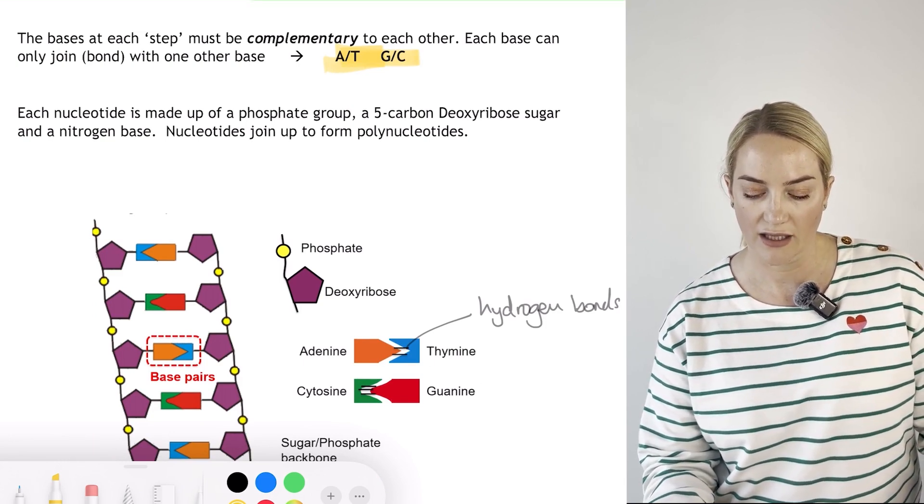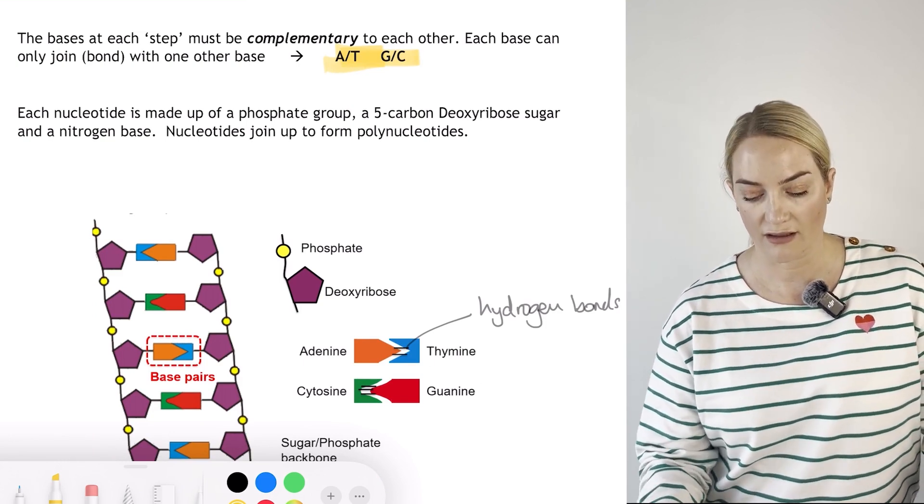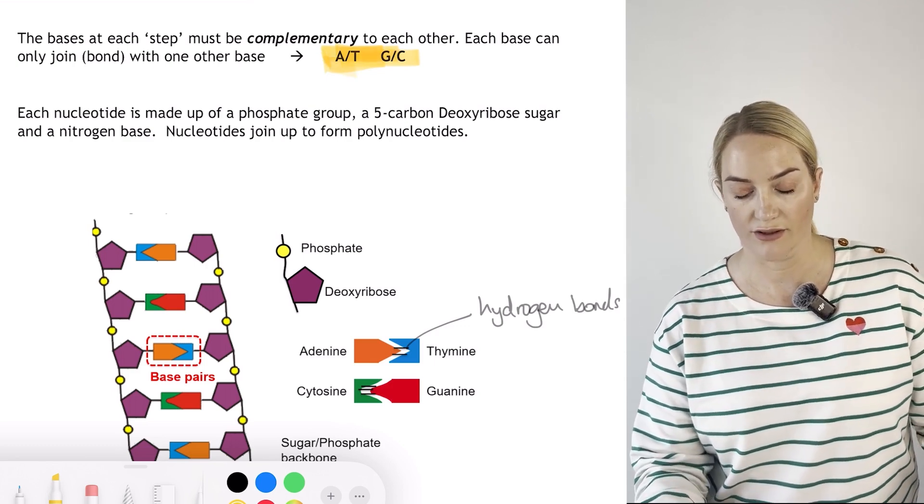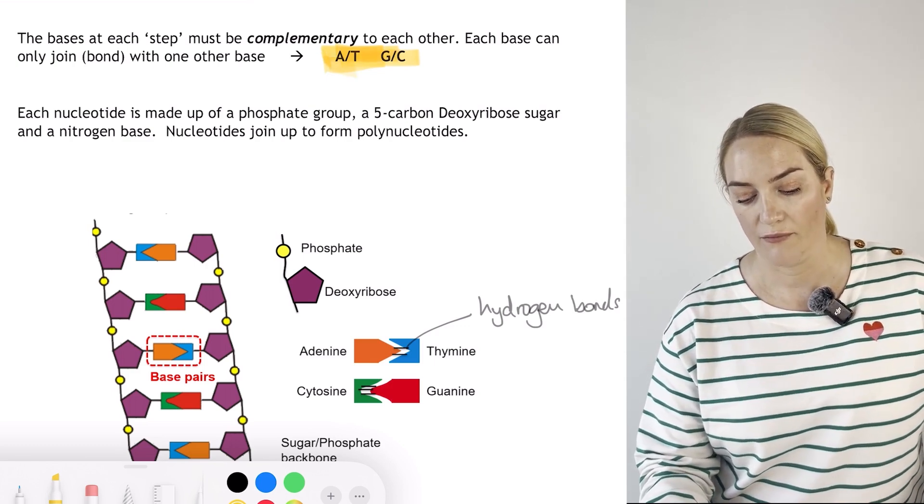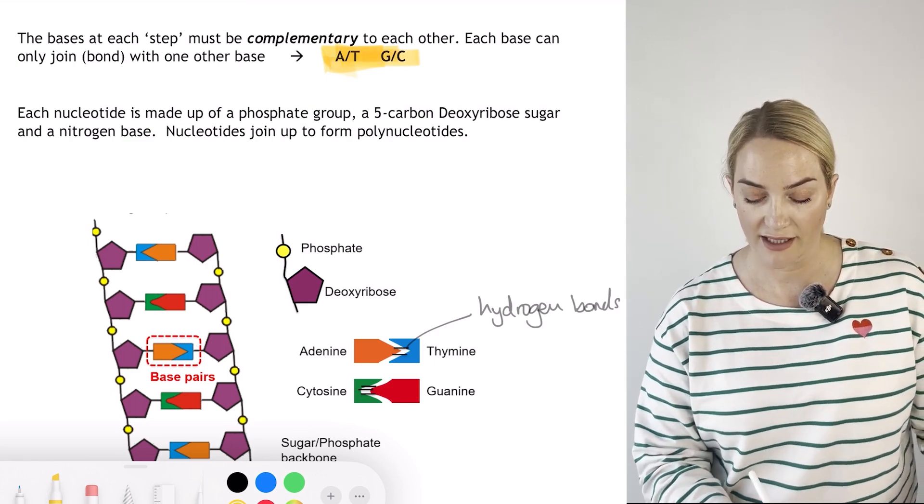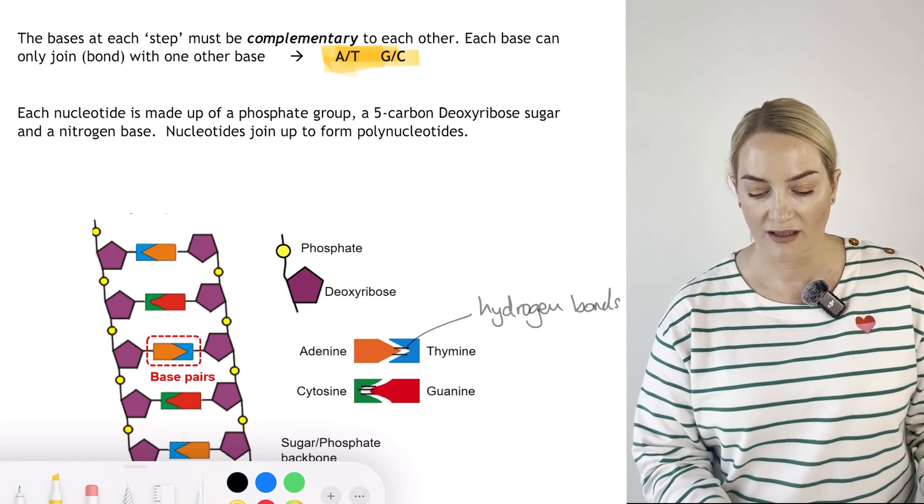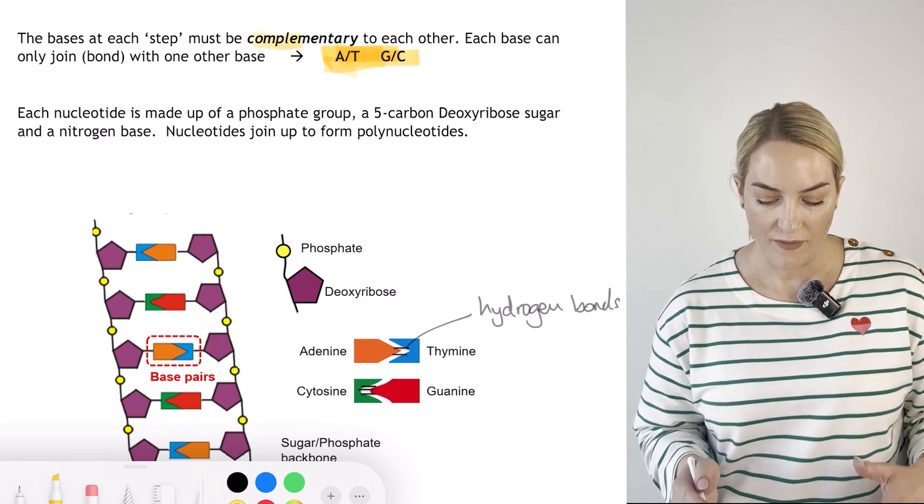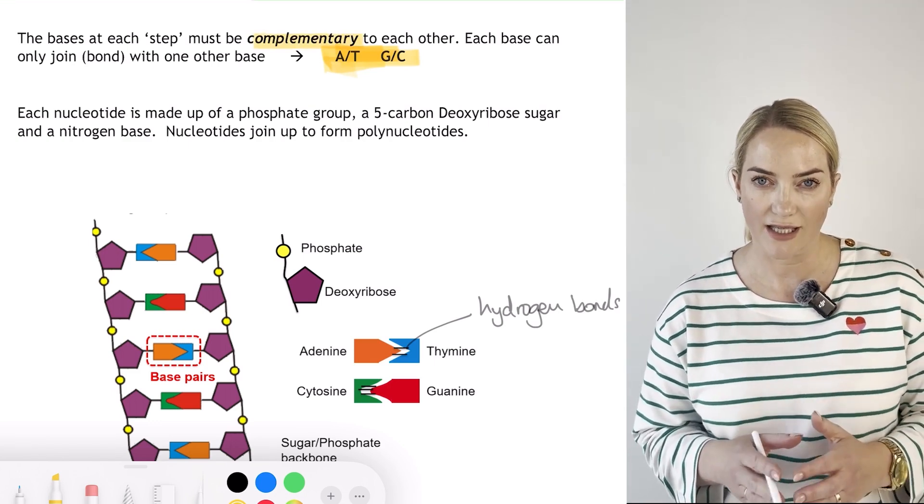Apple tart or chicken goujons - a past student said crazy girlfriend, whatever you remember. A will only pair with T, C will only pair with G. These are complementary to one another.